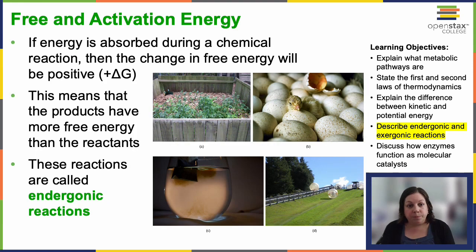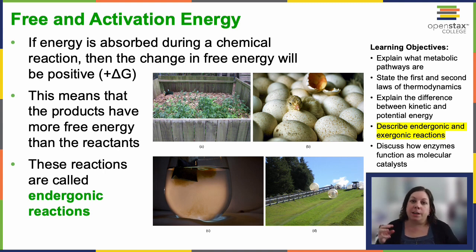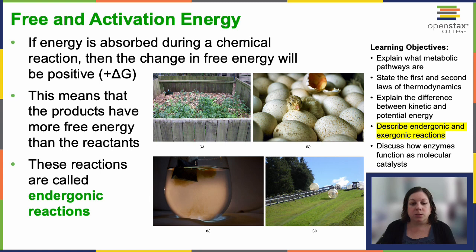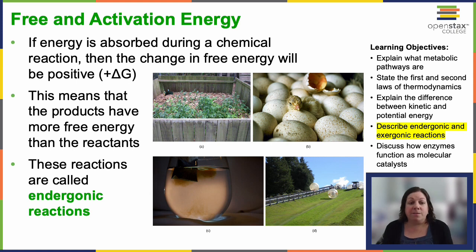When a reaction absorbs energy overall, we call that a positive delta G, indicating that the products have more free energy than the reactants. These are endergonic reactions and are non-spontaneous — they require an input of free energy to occur. We have some pictures on the slide of endergonic processes: growing a plant and hatching chicks. Those reactions require energy to be fed into the system.